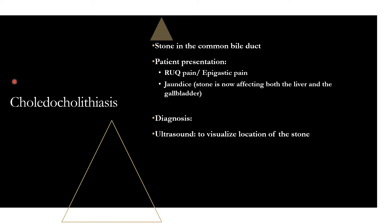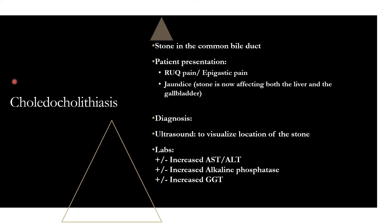For diagnosis, start with an ultrasound to visualize the location of the stone. Labs are more important here because you now have a cholestatic pattern. You may see increased AST and ALT, increased alkaline phosphatase, and increased GGT. Note that alkaline phosphatase is not specific to the liver — it can come from bone and kidneys as well. GGT is more liver-specific and is found in high concentrations in the liver; when elevated it can indicate liver injury. Some of these labs may be affected in a patient with choledocholithiasis.